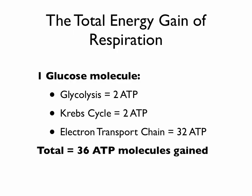The total energy gain of respiration is as follows. For every one glucose molecule, glycolysis produces 2 ATP, the Krebs cycle produces 2 ATP, and the electron transport chain creates a total of 32 ATP. That's a total of 36 ATP molecules gained for every one glucose molecule.